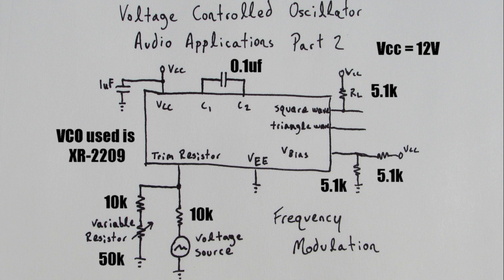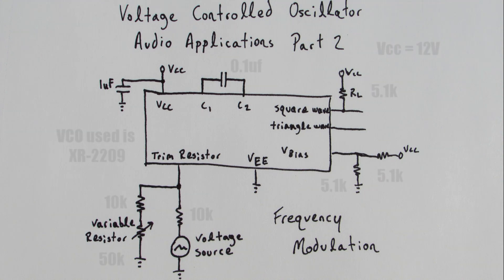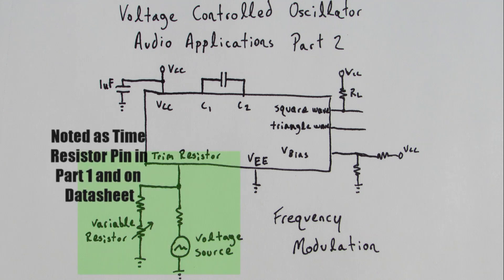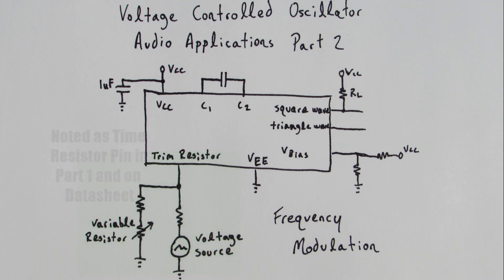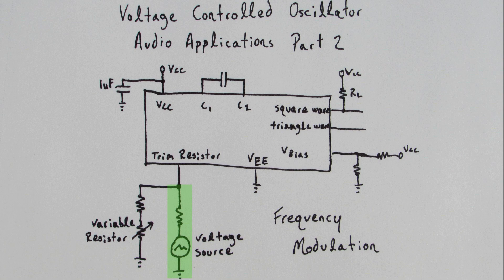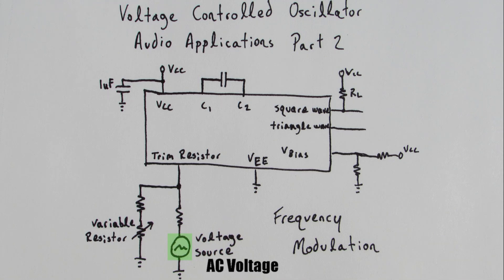This circuit configuration is almost identical to the one used in part 1. The main difference is in the trim resistor terminal. There are two main connections that lead up to the trim resistor pin. One is a series static and variable resistor and the other is a resistor and a voltage source. We'll see how the voltage source can allow us to change the output frequency depending on its amplitude. In other words, frequency modulation.